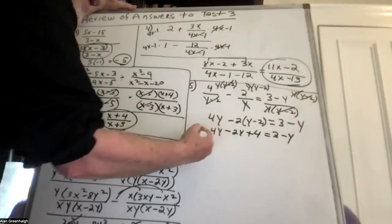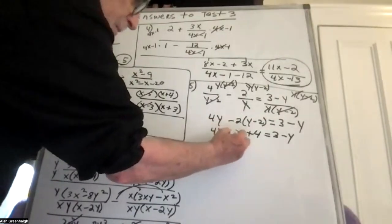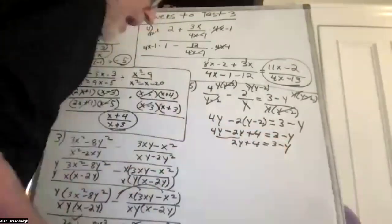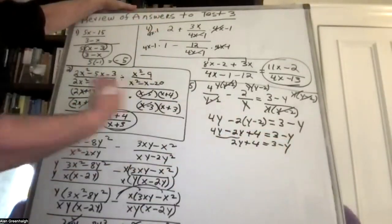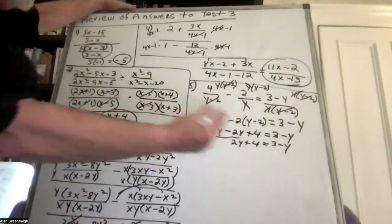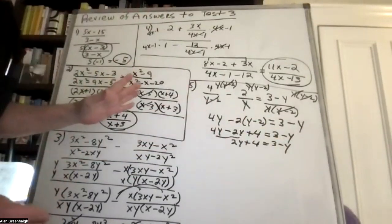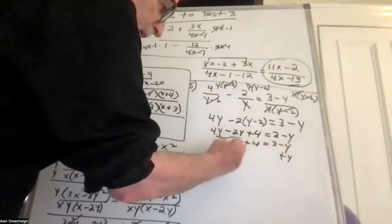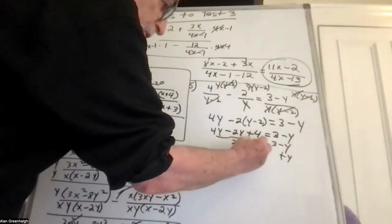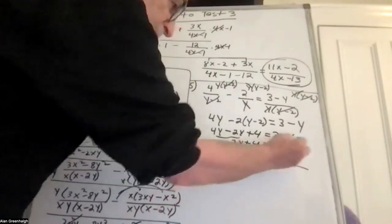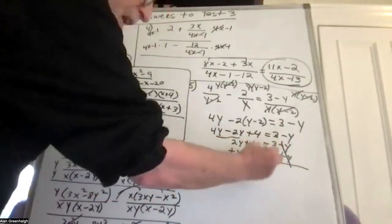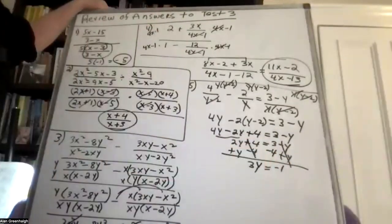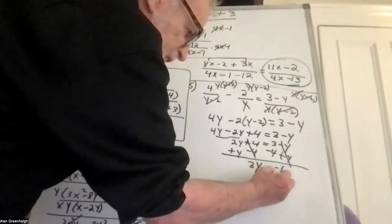You wind up with a rather easy linear equation: 4y minus 2y plus 4 equals 3 minus y. Combining like terms: 2y plus 4 equals 3 minus y. Bring over this y and this 4, leaving 3y equals negative 1. So y is equal to negative one-third.